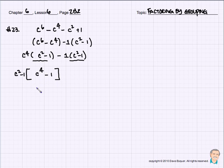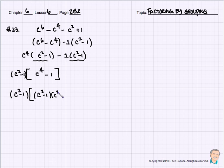We remember c to the 4th minus 1 is the difference of two squares. So we have c squared minus 1 times c squared plus 1. We remember the difference of two squares. And we know that c squared minus 1 is also the difference of two squares: c minus 1 times c plus 1. That's this piece.